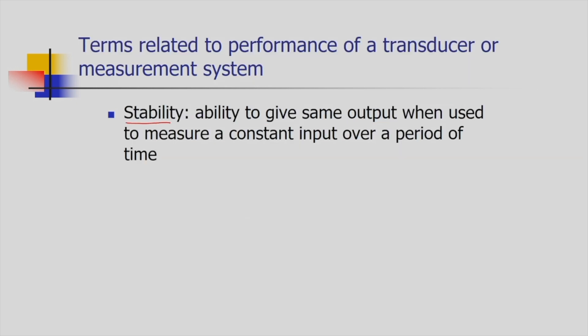Stability is defined as the ability to give the same output when used to measure a constant input over a period of time. For example, in a continuous induction furnace heated at constant voltage, we are applying electrical energy continuously with a fixed input. The furnace should give the same output over a long period but may not do so — that is called an unstable system, where the same input produces a different output.